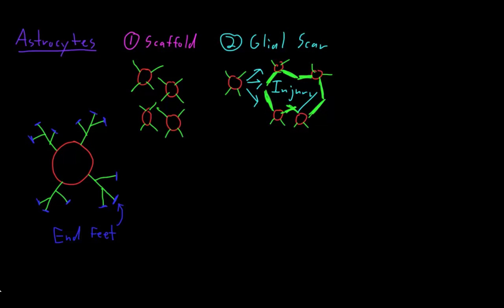So this whole process of astrocytes reacting to injury has multiple names. It's called gliosis, or astrogliosis, or astrocytosis, or reactive astrocytosis. And the actual scar tissue that's produced is called the glial scar.